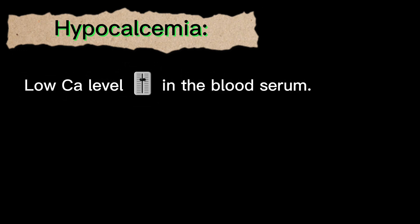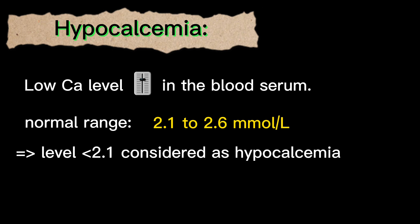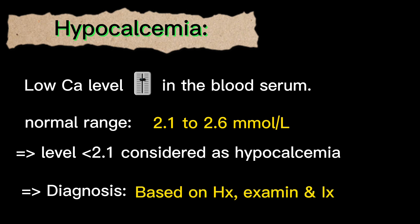Today I'm going to talk about hypocalcemia, but before discussing hypocalcemia I'm going to discuss how calcium is regulated in the body. There are two main things which regulate calcium in the serum: one is parathyroid hormone and the other is vitamin D. The normal range of calcium in the serum is 2.1 to 2.6 millimoles per liter. When this level falls below 2.1, it is considered hypocalcemia.